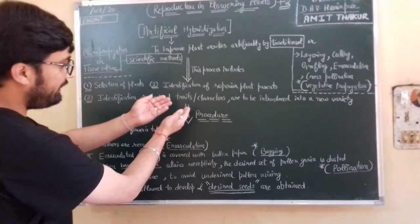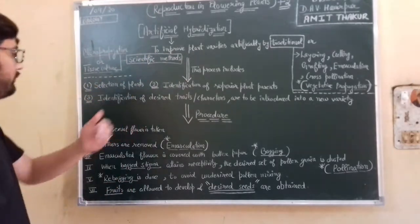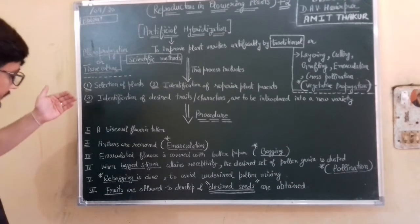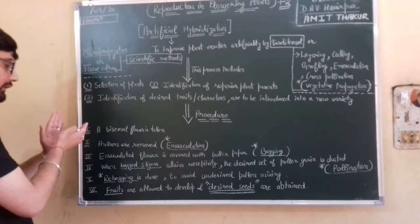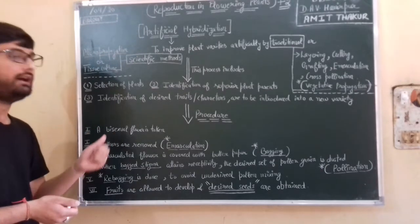And then what is the procedure to achieve this artificial hybridization? This procedure is a step-by-step procedure. So in the first step, we will have to take a bisexual flower.